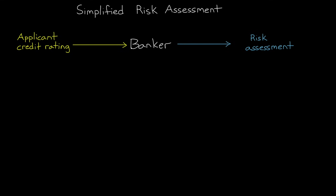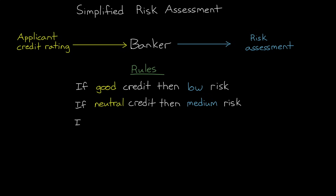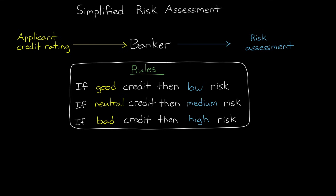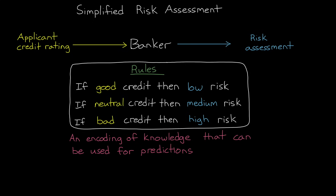So back to this problem where the banker is looking at credit rating and trying to determine risk. The banker might take advantage of existing knowledge and experience in the form of rules. For example, a rule might be if a person has good credit, then the applicant is deemed low risk. If they have neutral credit, then they are medium risk. And bad credit, then they are high risk. In this way, the rules themselves that have been developed over time based on experience and data are the encoding of knowledge — the model that can be used for prediction of whether a person will pay back a loan or not.